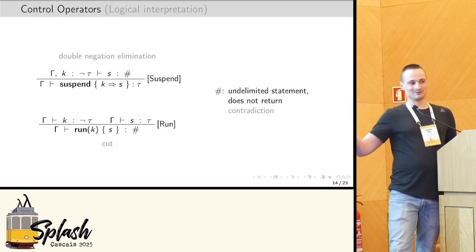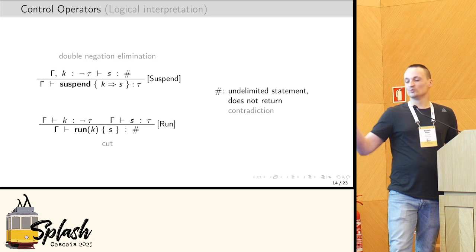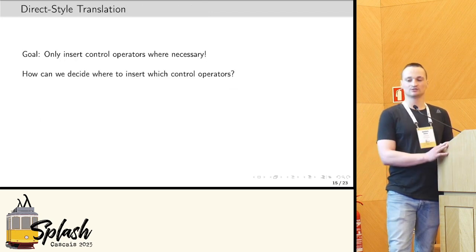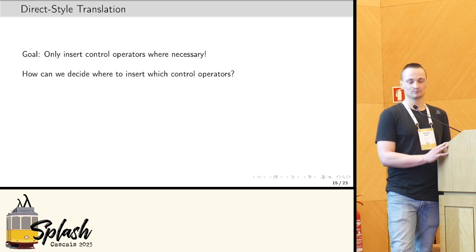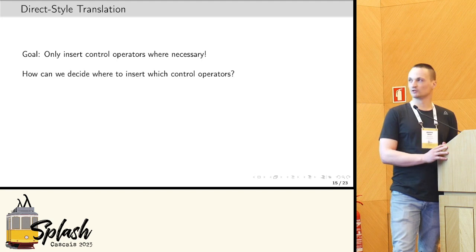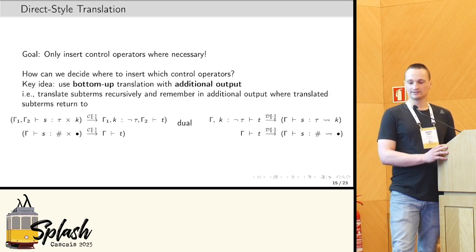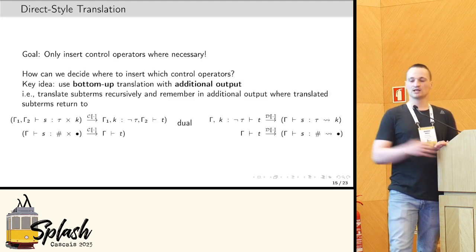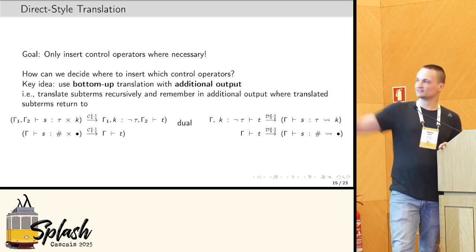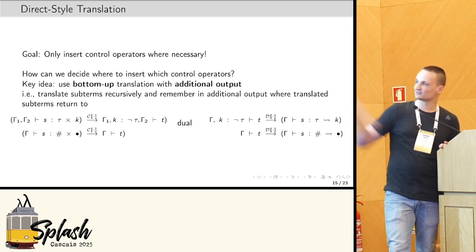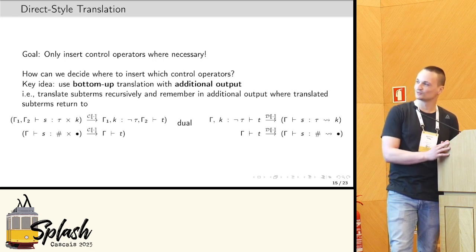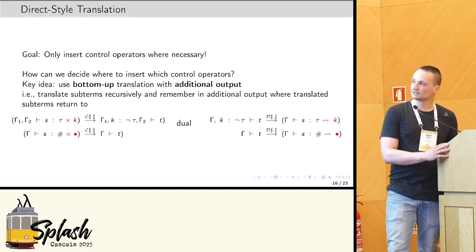Actually, we want to come back to compilation. So, now, our goal, of course, then, is to only insert these control operators when necessary. So, the question is, how can we actually decide where to insert which of these control operators? And the key idea in the paper, actually, is to use a bottom-up translation with an additional output.